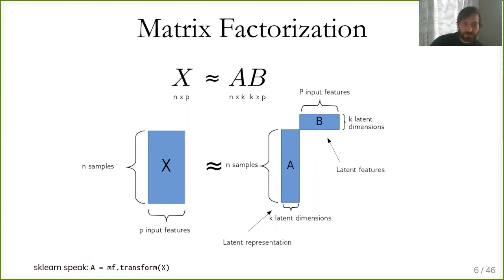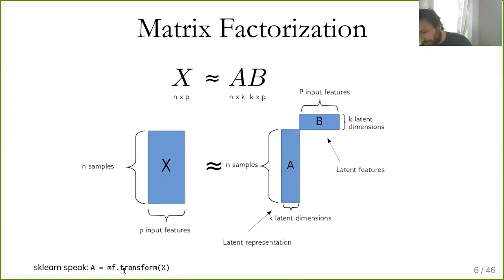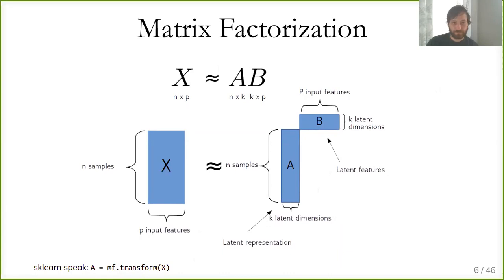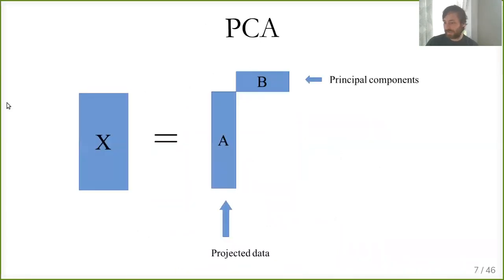In scikit-learn terms, if you have a transformer MF for matrix factorization, A is MF.transform(X) — the transformed representation of X. B, the latent features, is usually stored in the object and often called 'components'. For PCA, A would be the projected data and B would be the principal components.